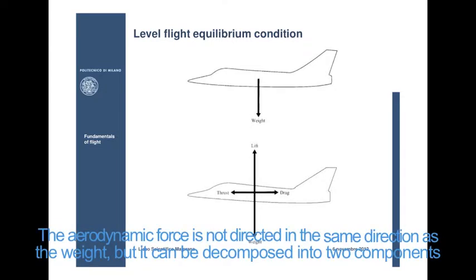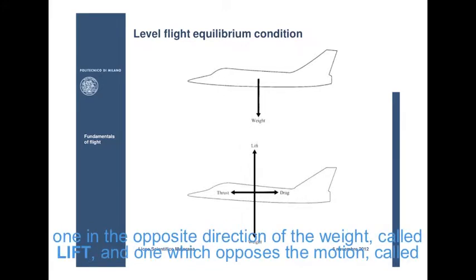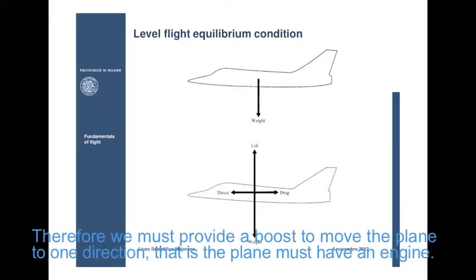The aerodynamic force is not directed precisely in the same direction as the weight, but it can be decomposed into two components. One in the opposite direction of the weight, called lift, and one which opposes the motion, called drag. Therefore, we must provide a boost to move the plane to one direction, that is the plane must have an engine.